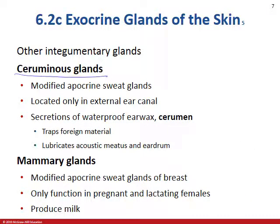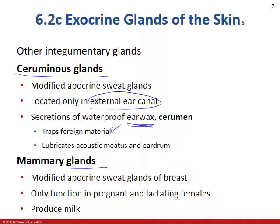We need to briefly mention two more types of exocrine glands: ceruminous glands and mammary glands. We focus on sweat glands and sebaceous glands, but we do need to look at these. Ceruminous glands are only in the external ear canal and they create earwax to stop any foreign material from making it through your ear canal to your brain. Mammary glands are modified apocrine sweat glands that function only in pregnancy and lactating females to produce milk. We'll talk more about how that mechanism gets turned on when we get to reproduction.